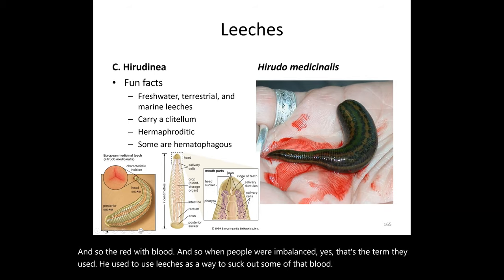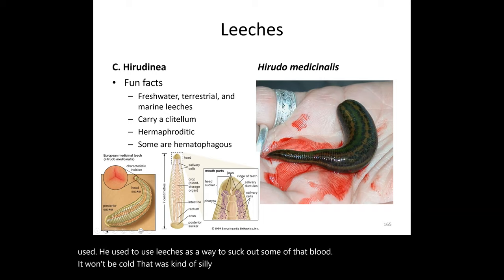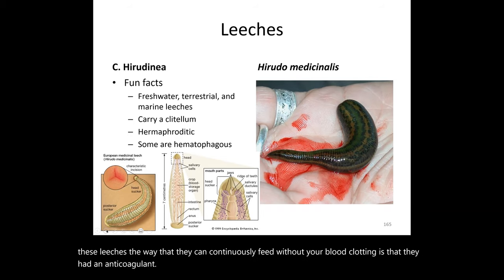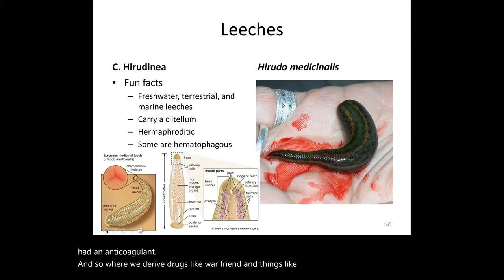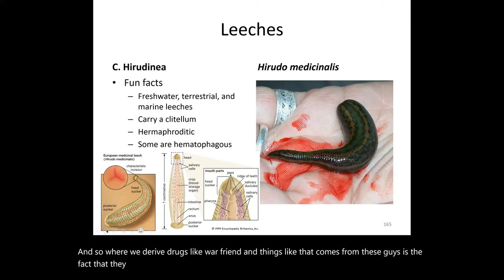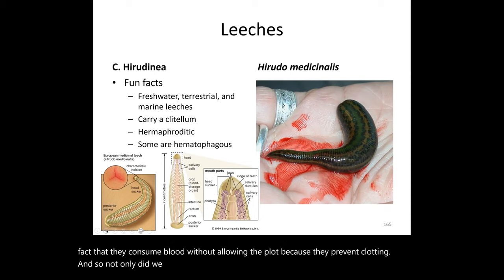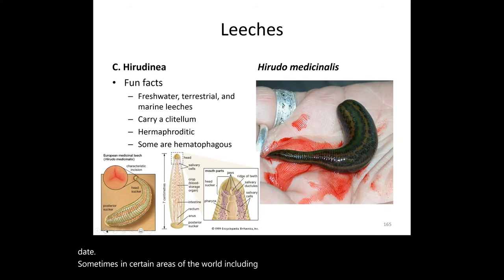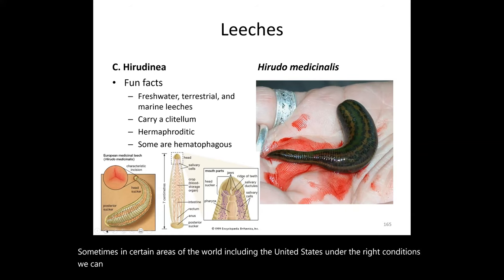That was misguided, but what turned out to be genuinely cool is that leeches can continuously feed without your blood clotting because they produce an anticoagulant. This is actually the basis for drugs like warfarin — derived from the fact that leeches prevent clotting while feeding. Not only do we derive medical treatments from this, but we still use leeches today in certain contexts, including in the United States under the right conditions.